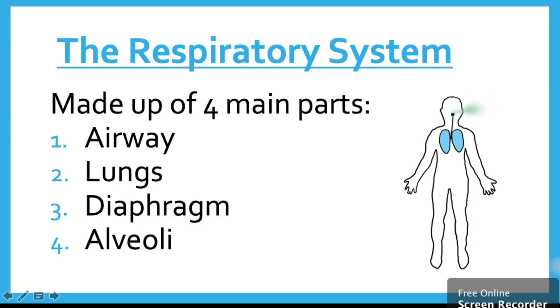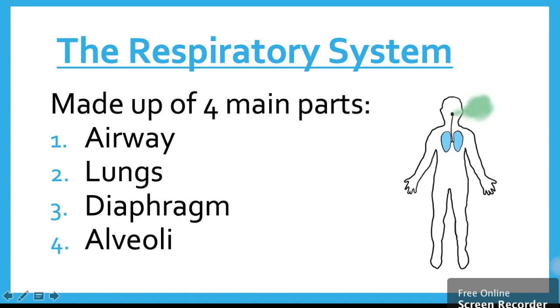The respiratory system has four main parts: the airway, lungs, diaphragm, and alveoli. We're going to touch on these during this lesson.